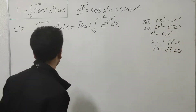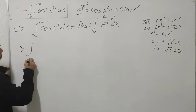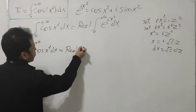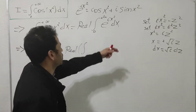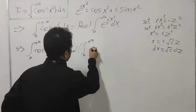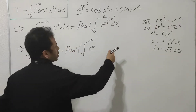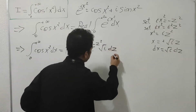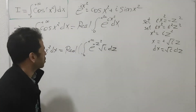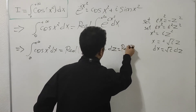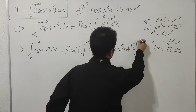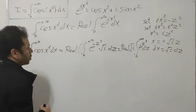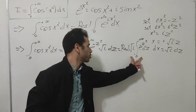Plugging this into the integral, as x goes from zero to plus infinity, cosine(x²) dx equals the real part of the integral from zero to plus infinity of e^(-z²) · √i dz. Taking √i outside as a constant, we have: real part of [√i · ∫₀^∞ e^(-z²) dz].